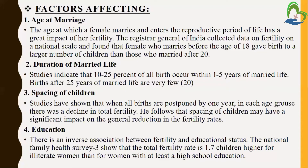Then, spacing of children — as already discussed in the previous session, if a couple cannot maintain 2 years of gap between 2 children, it will be a risk for the mother as well as the baby because all reproductive tract organs need about 1 year to return to the pre-pregnant state. Studies have shown that when all births are postponed by 1 year in each age group, there was a decline in total fertility rate. Spacing of children may have a significant impact on the general reduction in the fertility rate.